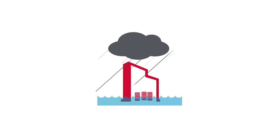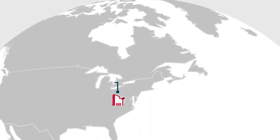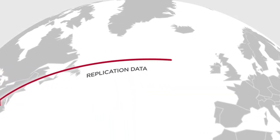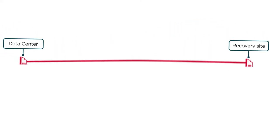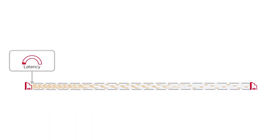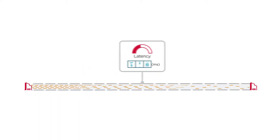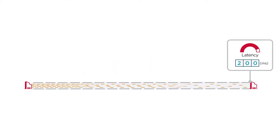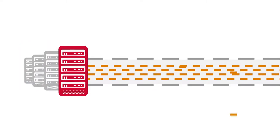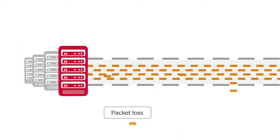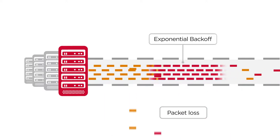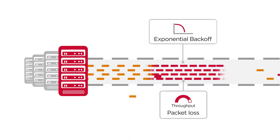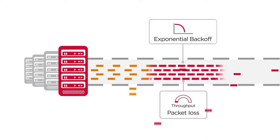Losing data can be catastrophic for any business. That's why your disaster recovery plan calls for replicating your valuable data somewhere far away. But the farther away the replication, the longer it takes to complete because of latency in the WAN. Replication throughput is further reduced by packet loss, which every WAN experiences. Protocol response to packet loss is exponential back-off, which can reduce throughput by 90% or more.